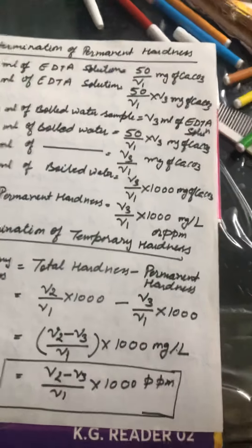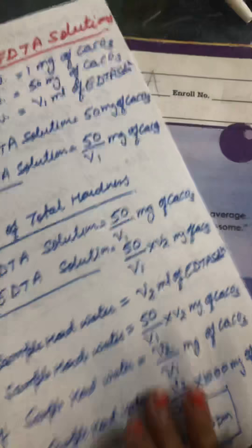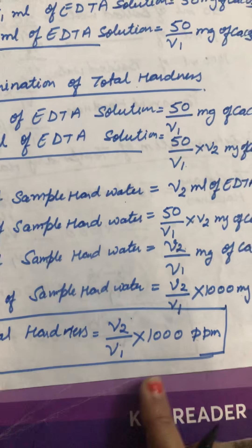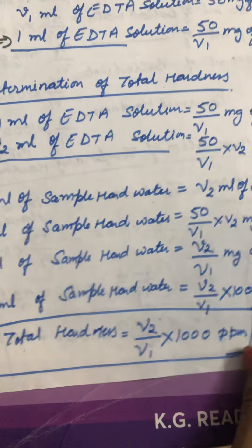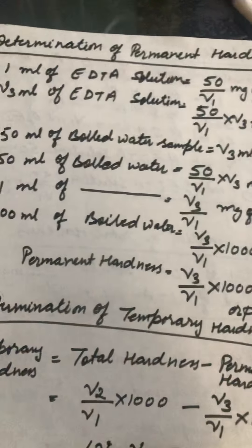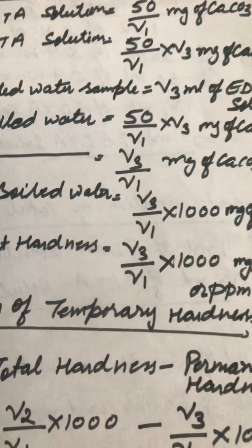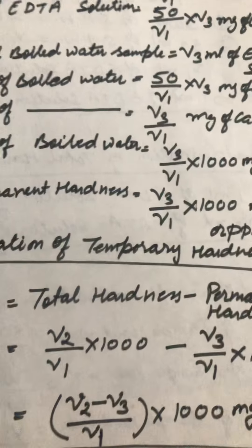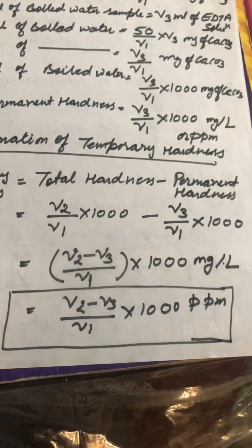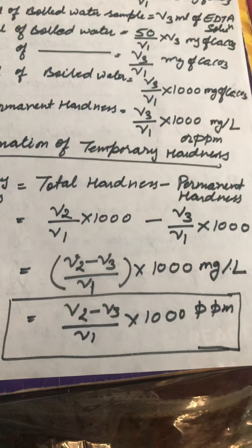In the calculation part we get three values: first is total hardness, which is V2/V1 × 1000; second is permanent hardness, which is V3/V1 × 1000; and third is temporary hardness, which is (V2 − V3)/V1 × 1000.